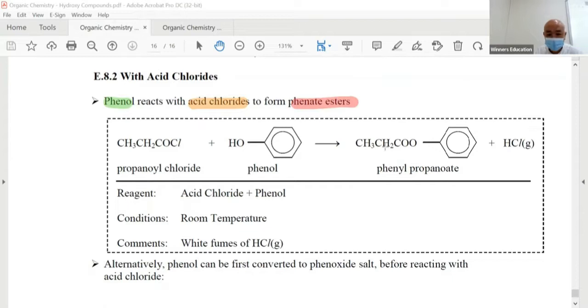All right, to form what we call phenate esters. It's exactly the same. Let me show you what it is. So find the ester linkage. Chop chop chop. Ready to color, the orange is here which is from the phenol.